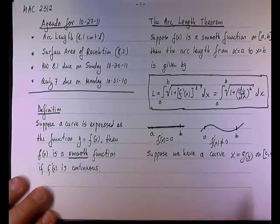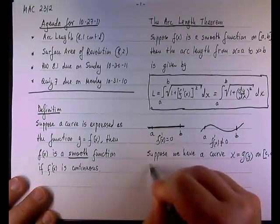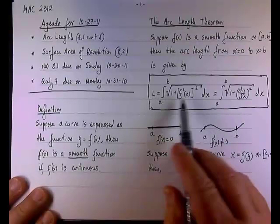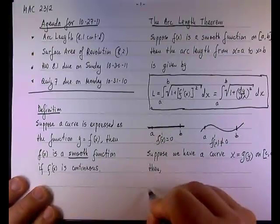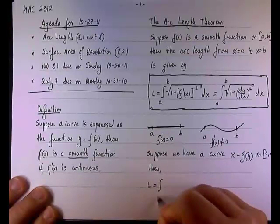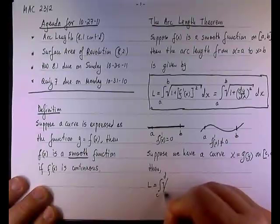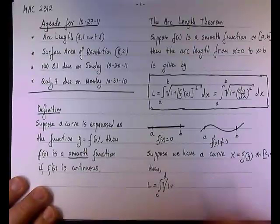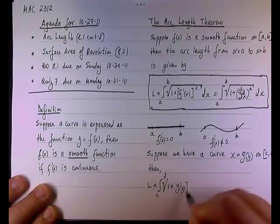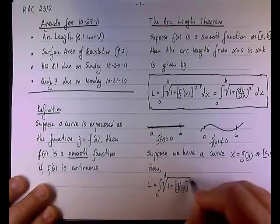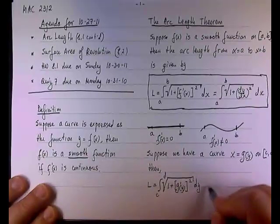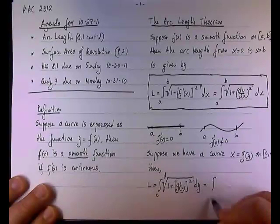In other words, y goes from c to d. What is the arc length in this case? Then the arc length L, instead of using f'(x), the theorem will read: the integral from c to d of the square root of 1 plus g'(y) squared, and the variable of integration would be dy.